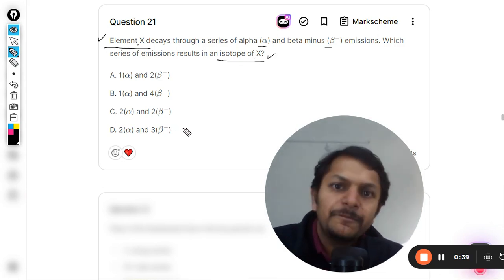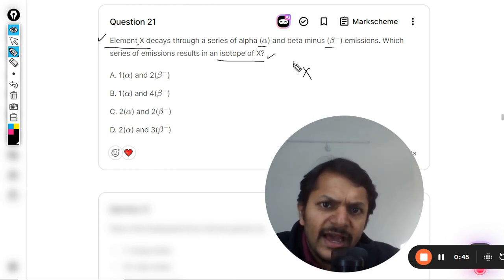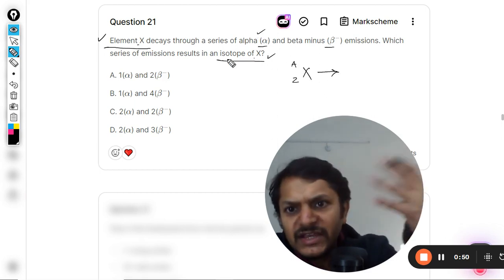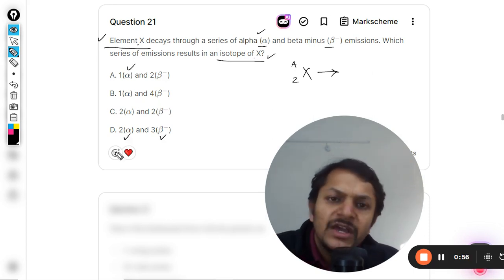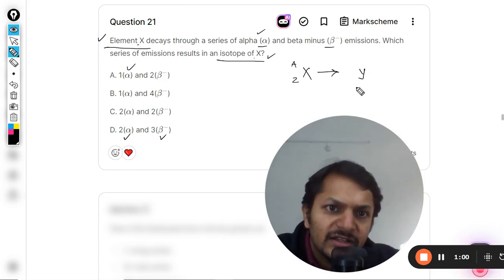What happens is, let us assume that X is given by mass number A and atomic number Z. Now, in all these options, first alpha is taking place and then we are talking about beta. So let us first have the alpha decay.